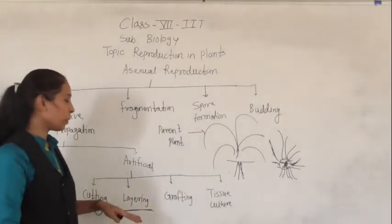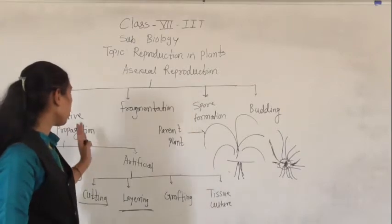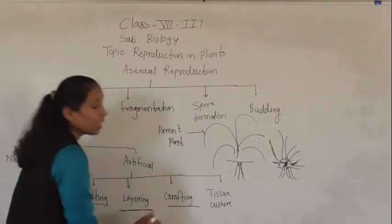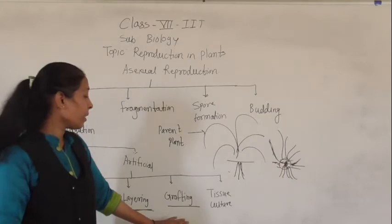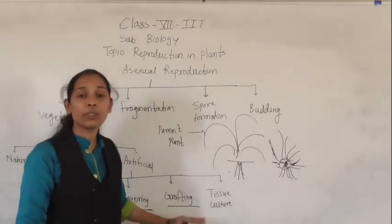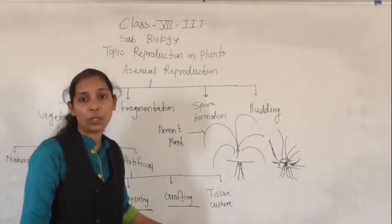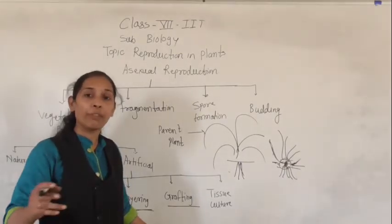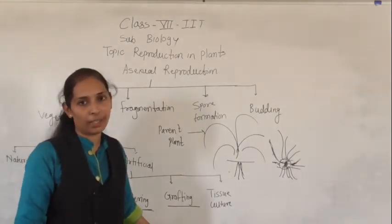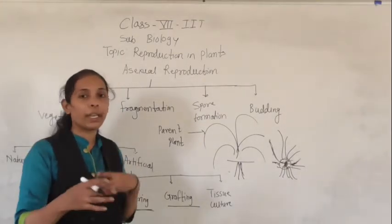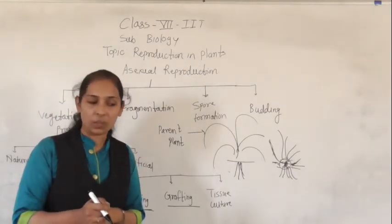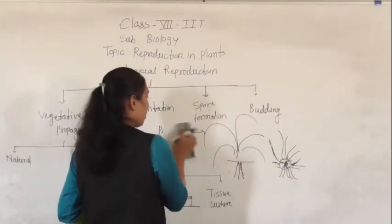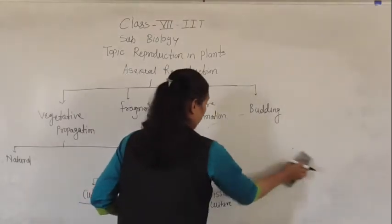The next artificial vegetative propagation method is grafting. With the help of grafting, it is very convenient to do a combination of two varieties or two different plants. With grafting we can combine two plants.